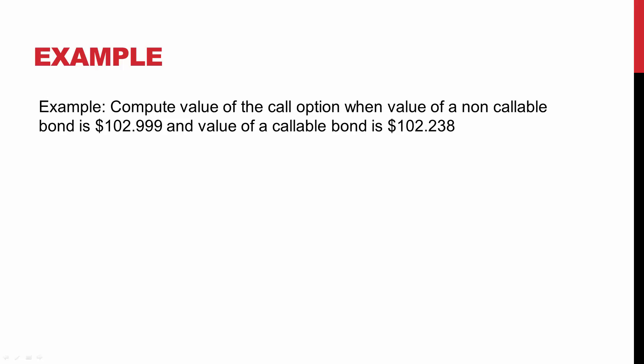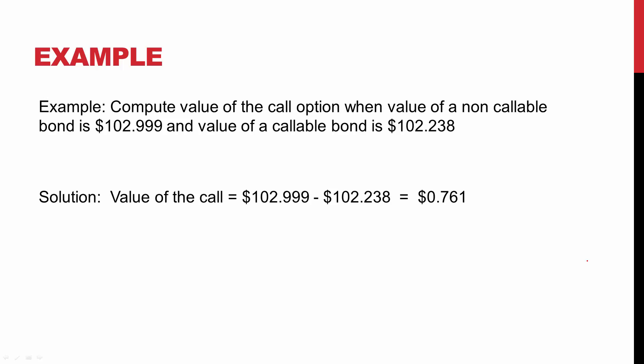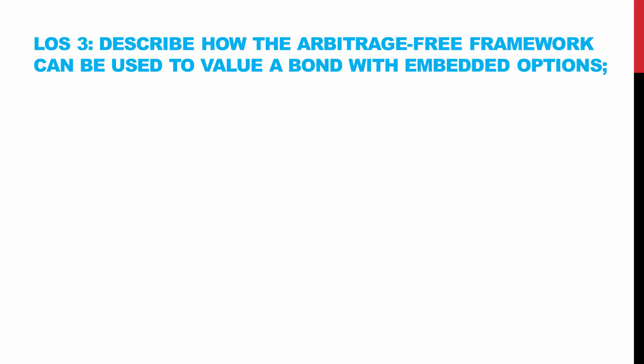For example, if the value of a non-callable bond is $102.999 and the value of a callable bond is $102.238, then the value of the call option is the difference between these two values, which comes to $0.761. The next learning outcome expects you to describe how the arbitrage-free framework can be used to value a bond with embedded options.